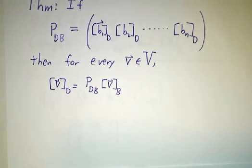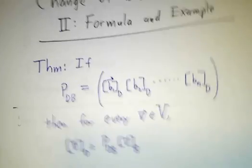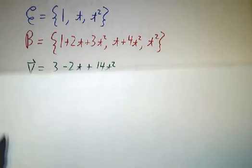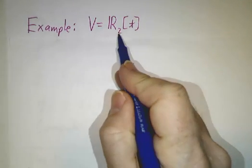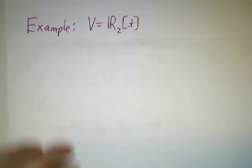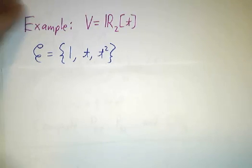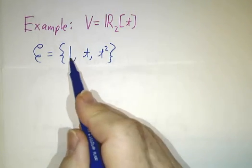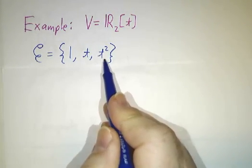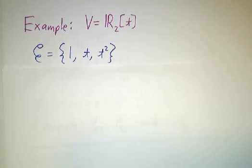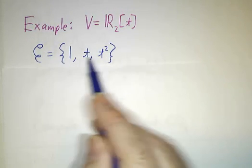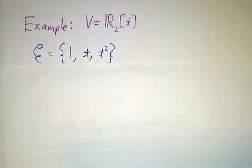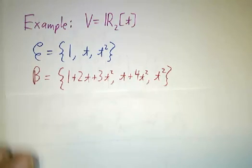So let's see how that works in an example. So in our example, this is an example that I put on a midterm a couple of years ago. Our vector space is the space of quadratic polynomials. Now there's an obvious basis to the space of quadratic polynomials, namely 1, t, and t squared. I'm going to call that basis e rather than b because for some reason the letter e is used for standard bases like this one.